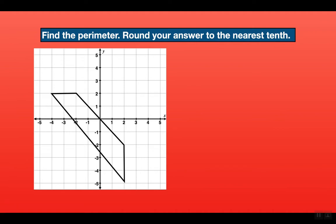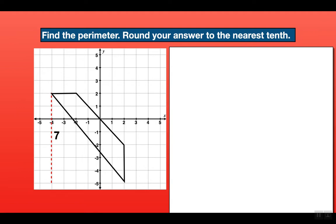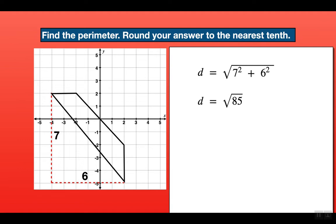Let's start with the slanted line on the bottom of this trapezoid. We're going to get the rise and the run from one point to the other. The rise is 7 and the run is 6. We square each of them and add them together, then take the square root of the result. So we do 7 squared plus 6 squared, which gives us the square root of 85. Let's leave it in that form for now — the length of that slanted line is the square root of 85.